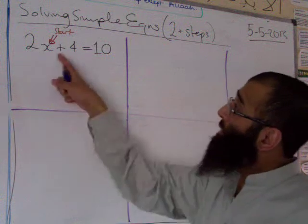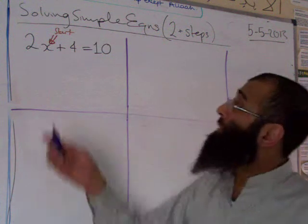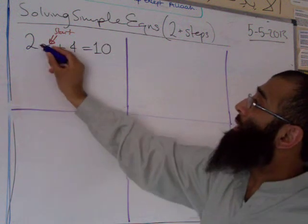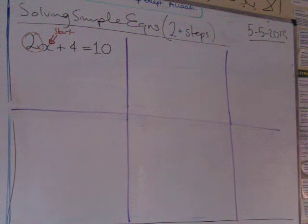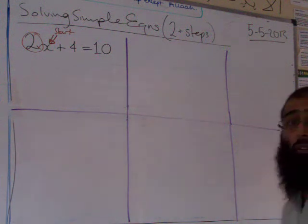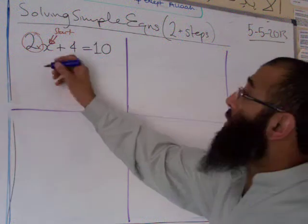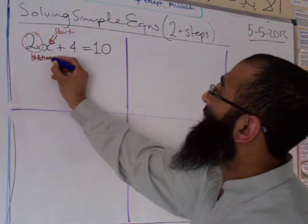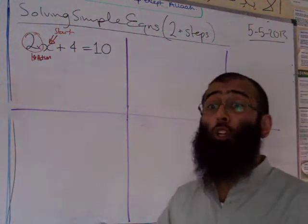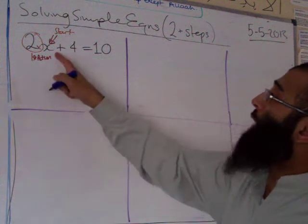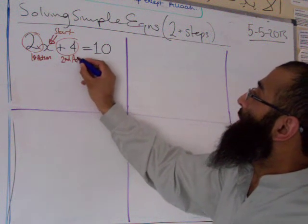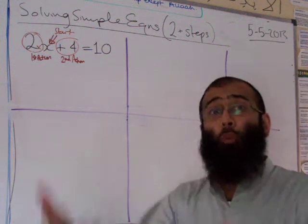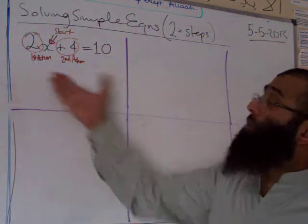Start at x and see what's being done to it. Right next to the x is times by two — we call this the first action. So x is first of all being doubled — that's the first thing done to x. Then we add four — we call this the second action. That's the second operation performed.